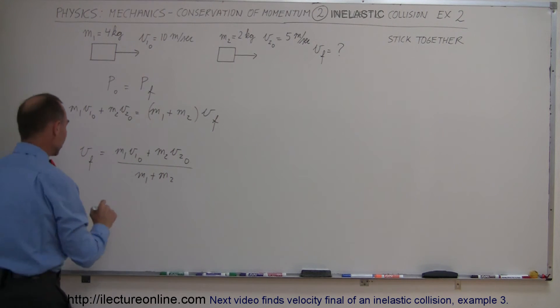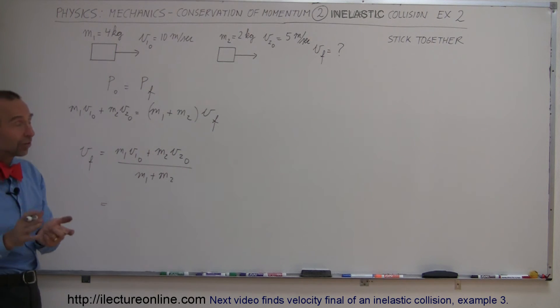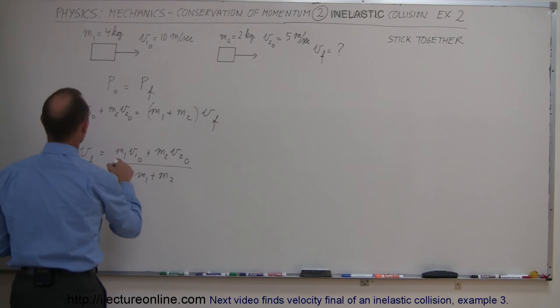Now I can go ahead and plug in the numbers. Again, anything to the right is positive, anything to the left is negative, although in this case both are moving to the right, they both have positive velocities. So we have 4 kilograms times v1 initial, which is 10 meters per second,